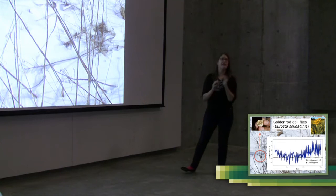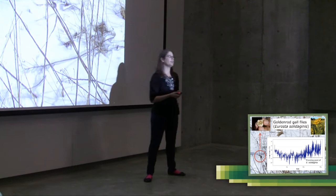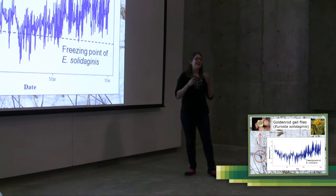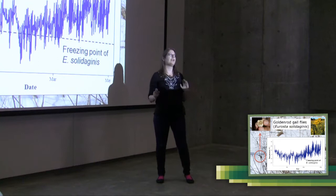But over the winter, the gallfly just stays within the ball that it's produced. It kind of hangs out in there as a home. And what that means for the gallfly is that it's not buffered by the snow like most insects are. So it actually experiences the full range of low temperatures that the air temperature gets to.